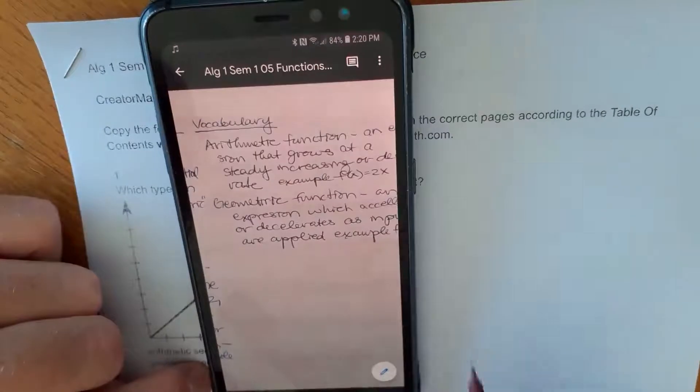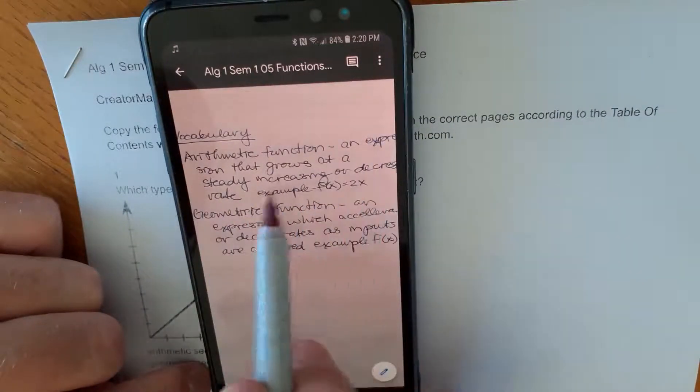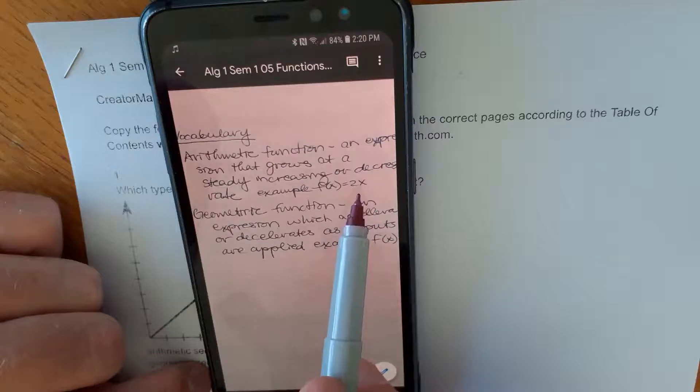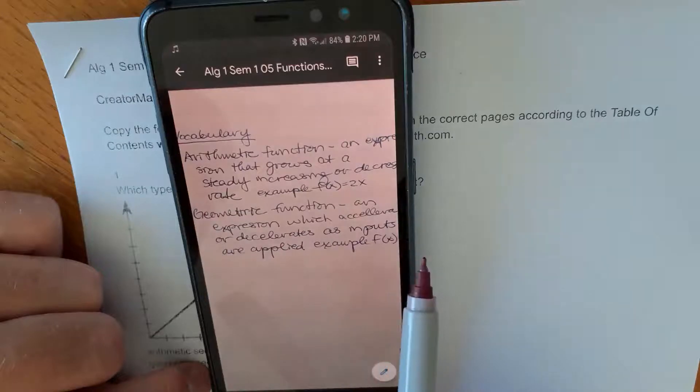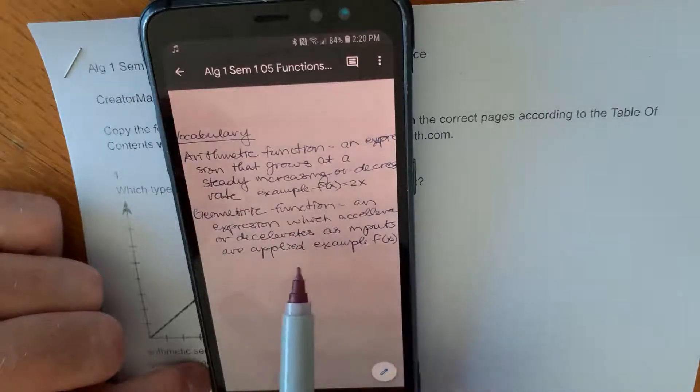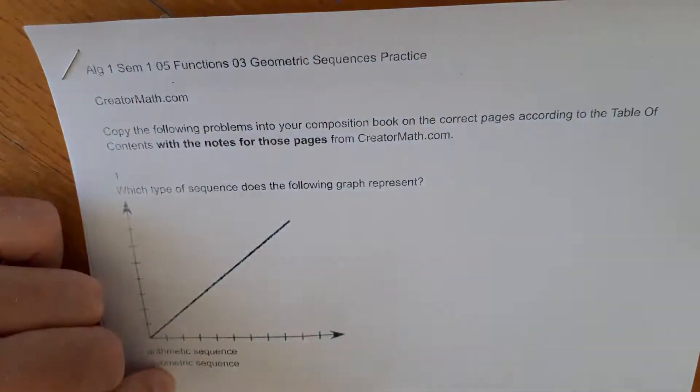So then arithmetic sequence we've covered in the prior lesson. Arithmetic function is one where it grows by a set number, as in a line or linear relationship. A geometric function is one that grows in an exponential or raised to a power relationship, all right? So with those notes in your comp book, let's look at the problem sets here.